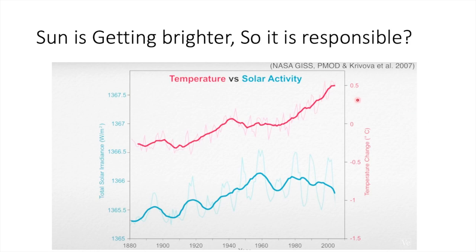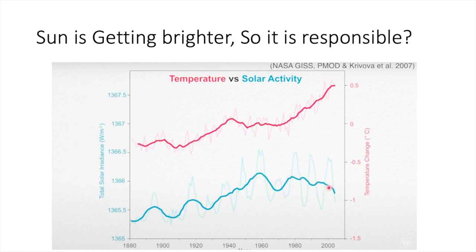Another myth: the sun is getting brighter. About 4.6 billion years ago our Earth was formed, and from that time till now, the brightness of the sun has been increasing — so is it responsible for global warming? No. Here we can see two curves: the red one shows temperature and the blue one shows solar activity over a period from 1880 to 2000. There is a peak in solar activity, and after about 1960 it shows a decreasing curve. But the temperature keeps increasing. So both are contradicting each other — even if the sun's activity is decreasing, the Earth's temperature is still getting higher.